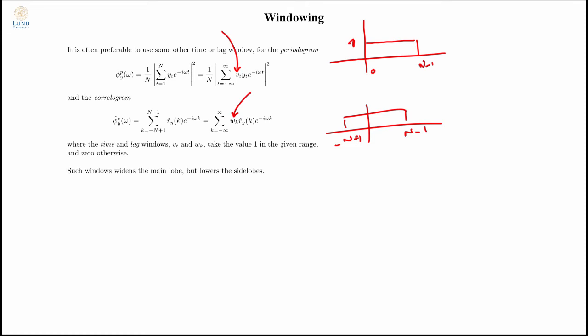Recall from your system theory that multiplication in time domain is the same as convolution in frequency domain. That means I will spread the information in the power spectral density with the spreading of the window function in the frequency domain. If I look at the frequency representation of these windows, I will get a sinc function in this case. You will see that this will create a smearing effect in my spectrum.